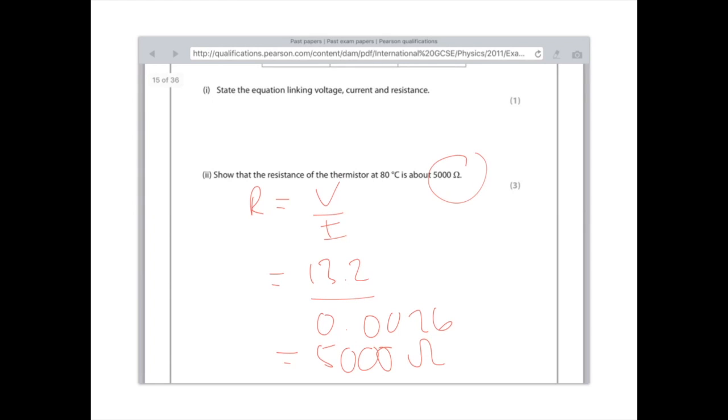Do make sure that you've got your units converted correctly. At the end of the day, even if you're not sure, the good thing is they want you to show that the answer is about 5000, so if you're not getting an answer of 5000, you know you've done something wrong. Just keep jiggling the numbers—don't just leave that question out.